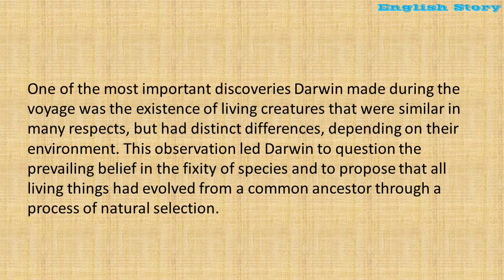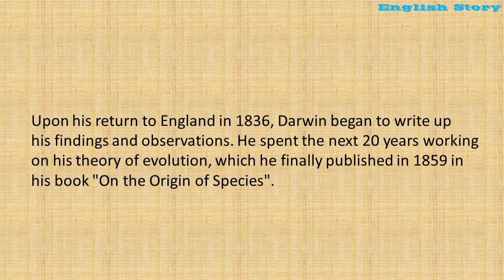One of the most important discoveries Darwin made during the voyage was the existence of living creatures that were similar in many respects, but had distinct differences depending on their environment. This observation led Darwin to question the prevailing belief in the fixity of species and to propose that all living things had evolved from a common ancestor through a process of natural selection. Upon his return to England in 1836, Darwin began to write up his findings and observations, spending the next twenty years working on his theory of evolution, which he finally published in 1859 in his book On the Origin of Species.